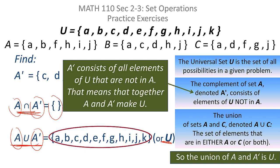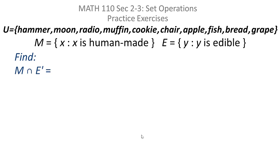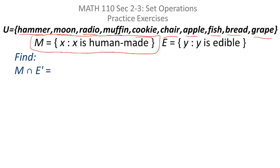It doesn't matter what the particular sets are. Now let's continue with this exercise. We're given a universal set consisting of the objects: hammer, moon, radio, muffin, cookie, chair, apple, fish, bread, and grape. We're given two subsets of the universal set. The set M consists of the objects from the universal set that are human-made. The set E consists of the objects from the universal set that are edible. They're asking us to find the intersection of M with E complement.